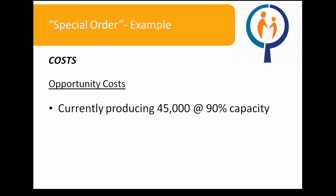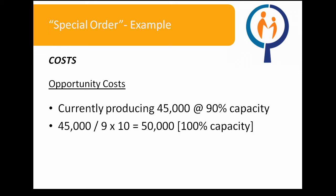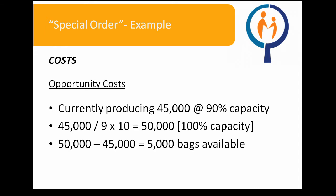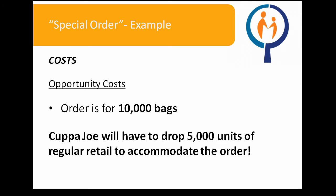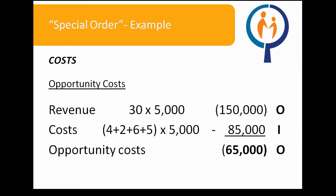We do, however, have an opportunity cost. We are currently producing 45,000 bags of Kahlua and are 90% at capacity. Based on this, we can determine that 50,000 bags is the maximum capacity of the factory, meaning we still have room to produce another 5,000 bags. However, the special order is for 10,000 bags, so Cup of Joe will have to drop 5,000 units of their regular retail operations to accommodate it. If we drop 5,000 bags from regular retail, we lose revenues of $150,000 based on the $30 retail price, but save $85,000 on variable costs — direct materials ($4), direct labor ($2), variable manufacturing overhead ($6), and selling expenses ($5) on 5,000 bags. When combined, accepting the special order results in a $65,000 opportunity cost outflow.